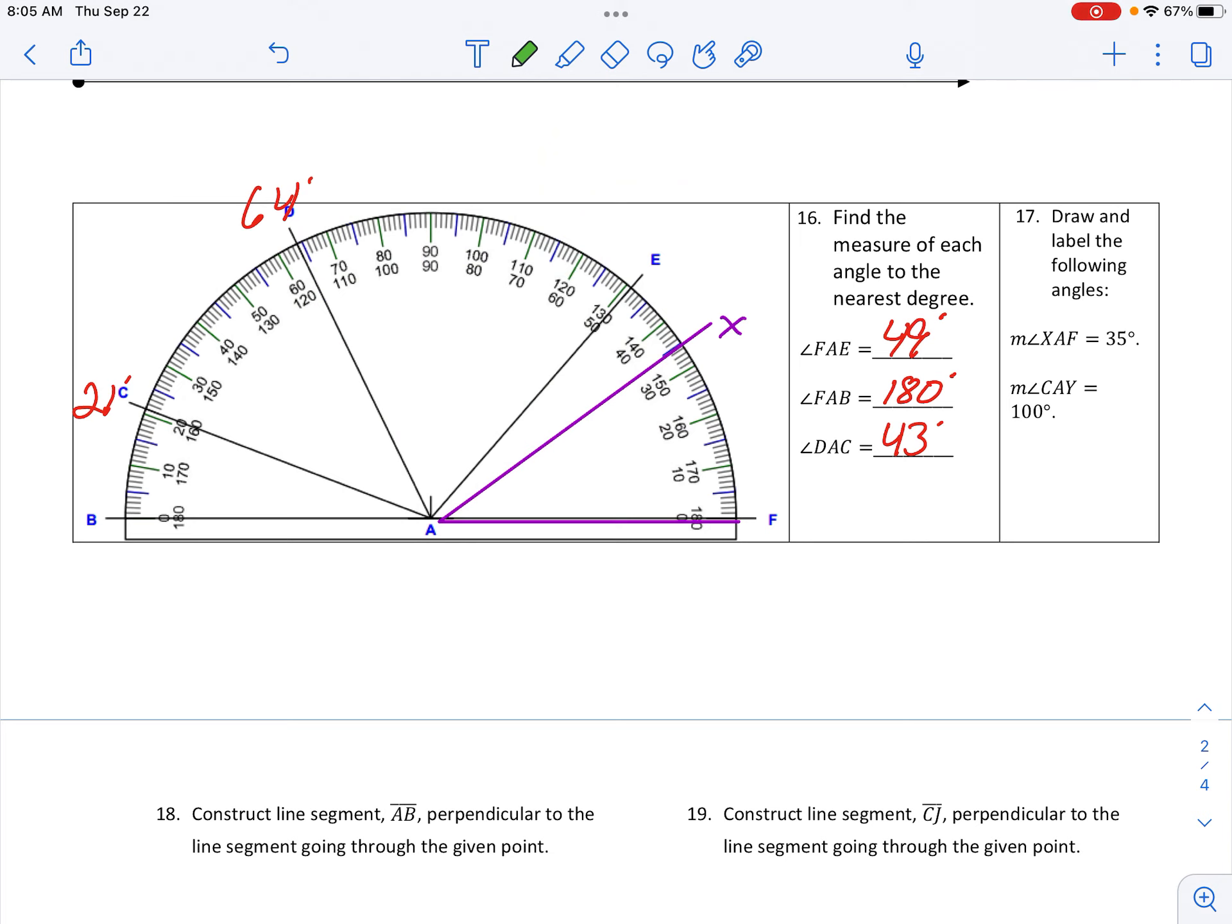So C is right here, and then Y needs to go through at 121, which is right about there for Y.